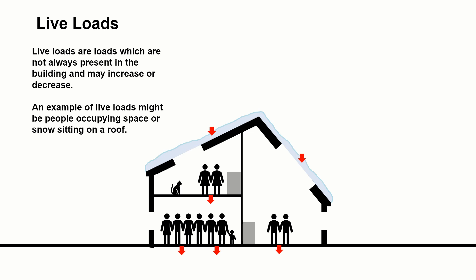The flip side of these loads is that you can look at live loads. These are things which are not always present in the building and probably aren't fixed to the building. This might be furniture, beds, sofas, people moving around, cats, dogs, snow on the roof. Anything that can reasonably be planned for, but isn't always part of the building.